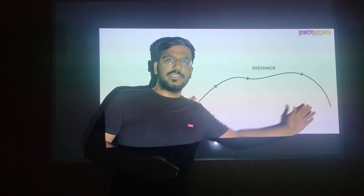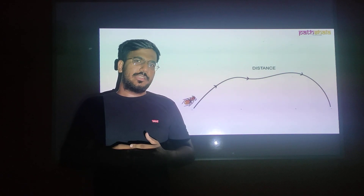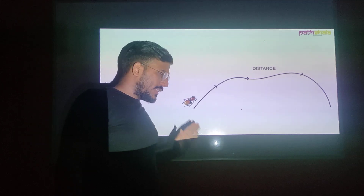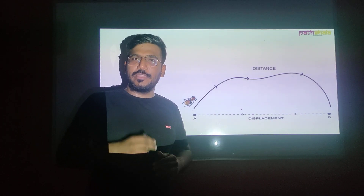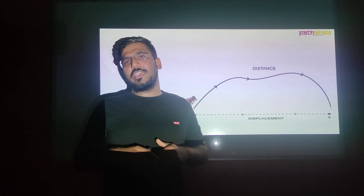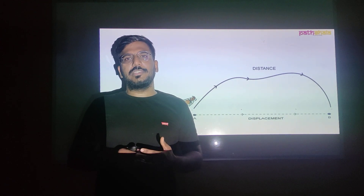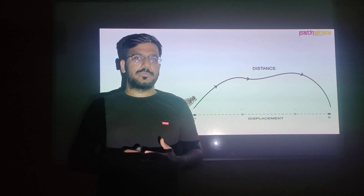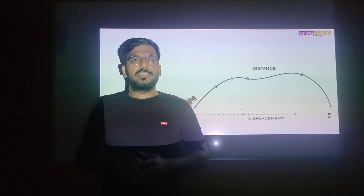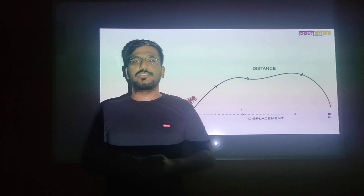In short, distance is the entire or actual path covered by the body between two points in which it moves. But if the ant were smarter, instead of taking a long path, it could take a shortcut — the shortest path from start to end. In physics, this term is called displacement. So the entire long actual path is distance, and the shortcut or shortest path covered by a body in motion is displacement.